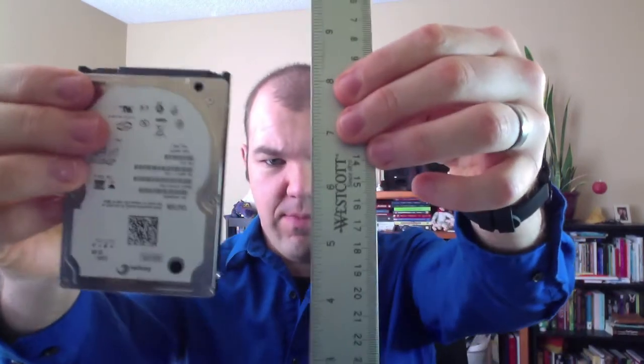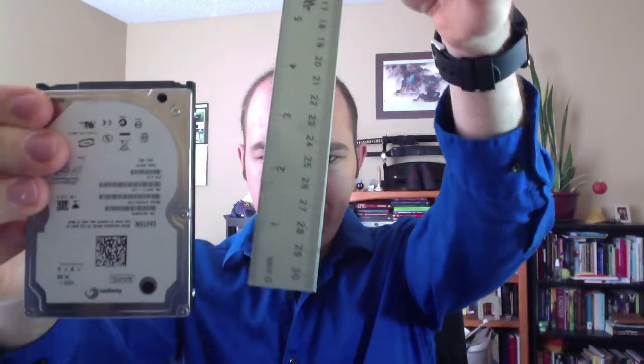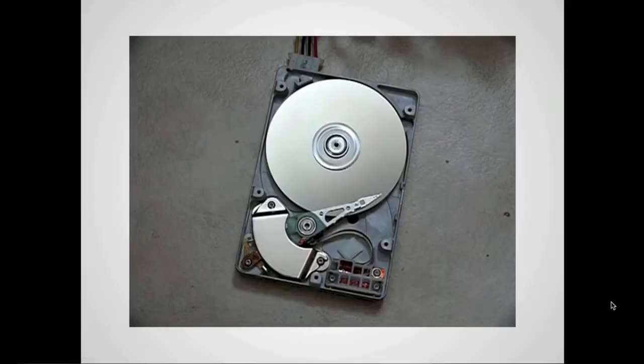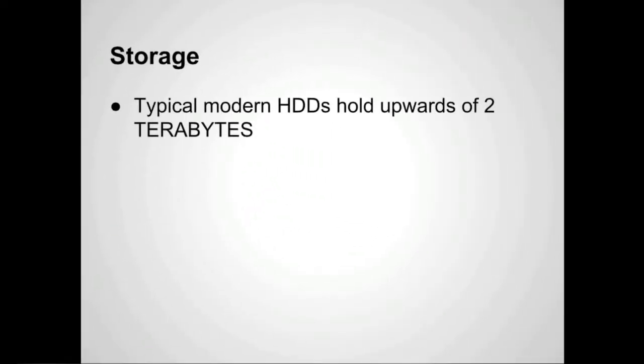Solid state drives don't use rare earth materials like traditional hard drives do, so they're a little better for the environment. This is a hard drive with a cover on — the one in the slide has the cover off so you can see the platters. This is a one terabyte desktop hard drive I was using in a NAS, with two of them working together for two terabytes of storage. There's also a laptop hard drive here for size comparison. Modern hard drives can hold upwards of two terabytes.